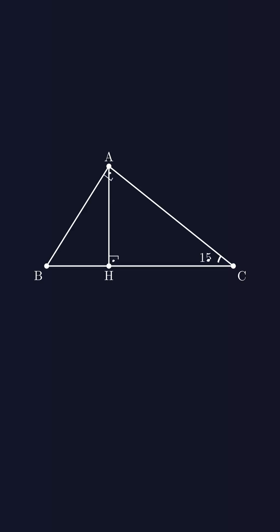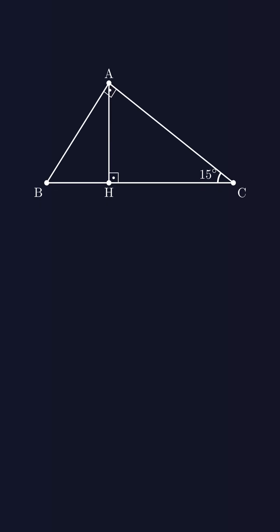In this question, triangle ABC is a right triangle, and we're given that angle ACB is 15 degrees. A perpendicular is drawn from point A to side BC. We're asked to find the ratio of AH to BC.